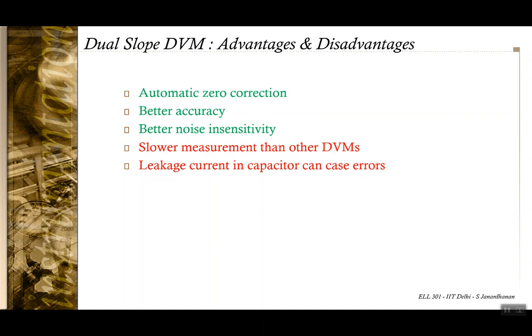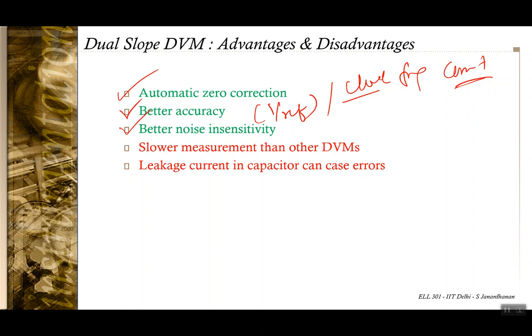For the dual slope DVM: because of the zero correction circuit there is automatic zero correction. Due to fewer assumptions — only knowing VREF and assuming constant clock frequency — it has better accuracy and is better insulated against noise. However, there are two ramp comparisons — a charging and a discharging cycle — whereas the ramp type and staircase ramp DVMs have only one ramp. So the measurement cycle is slower, perhaps measuring at half the rate of the earlier DVMs. Also, leakage current in the integrating capacitor can cause errors.